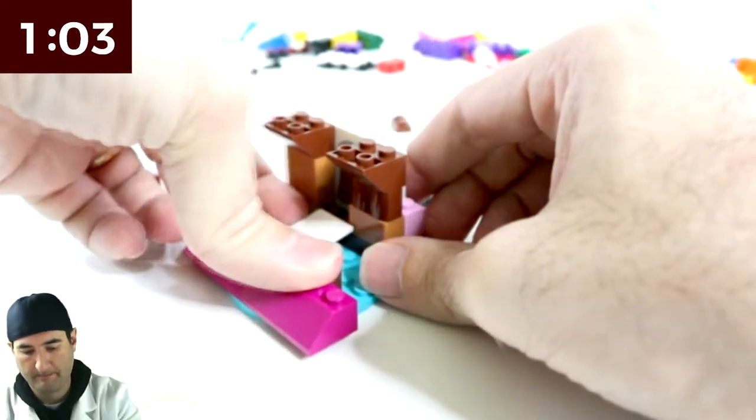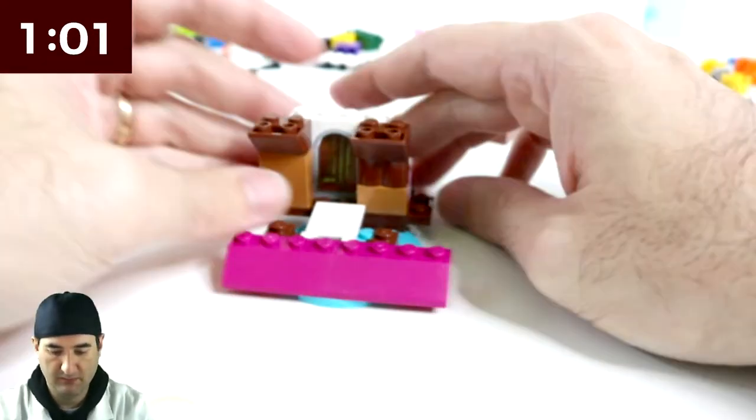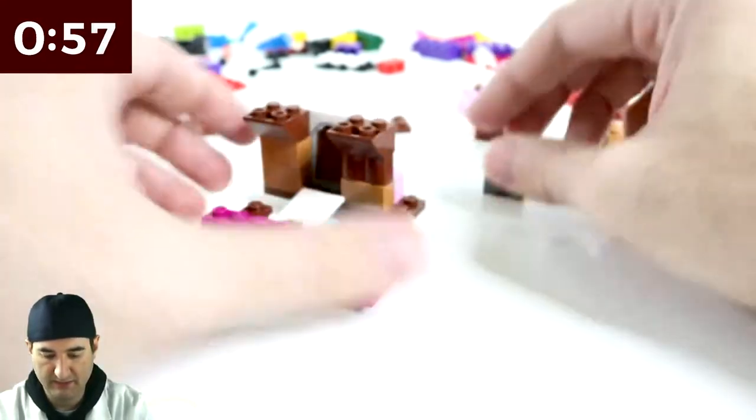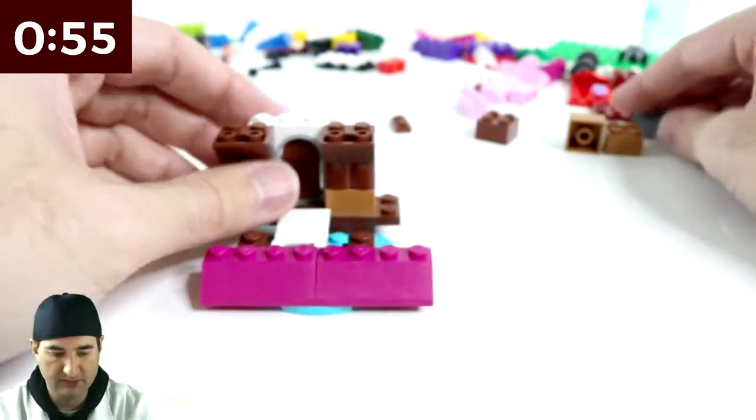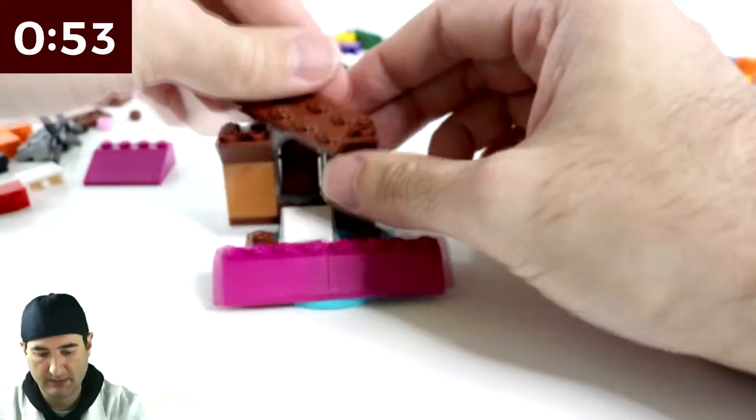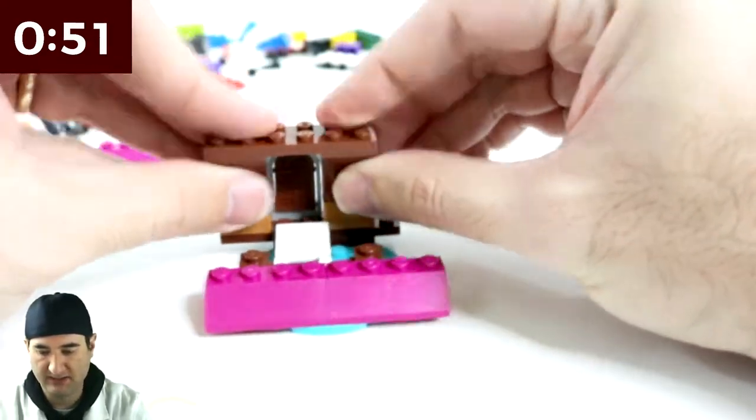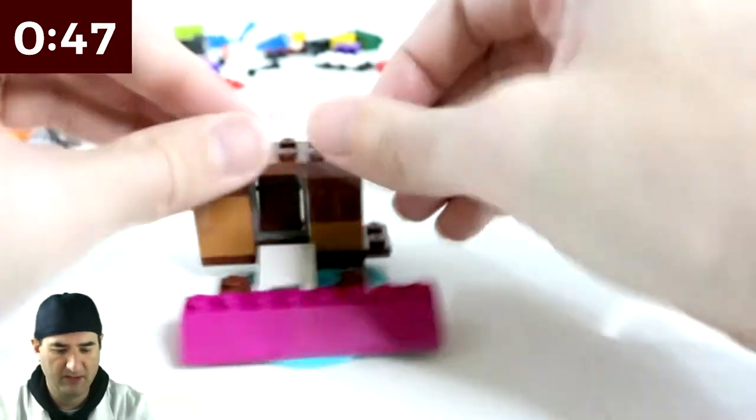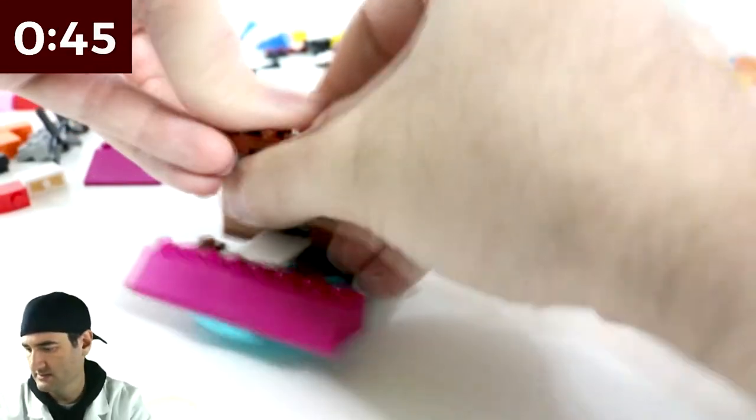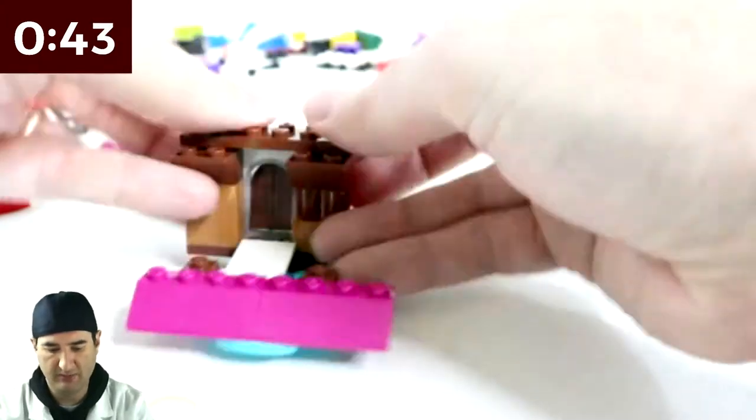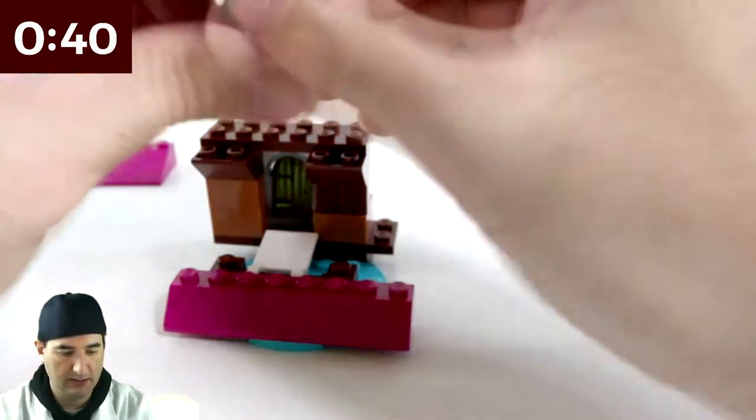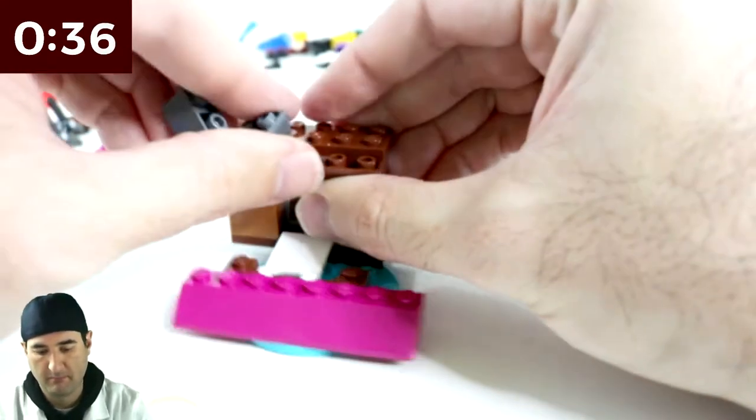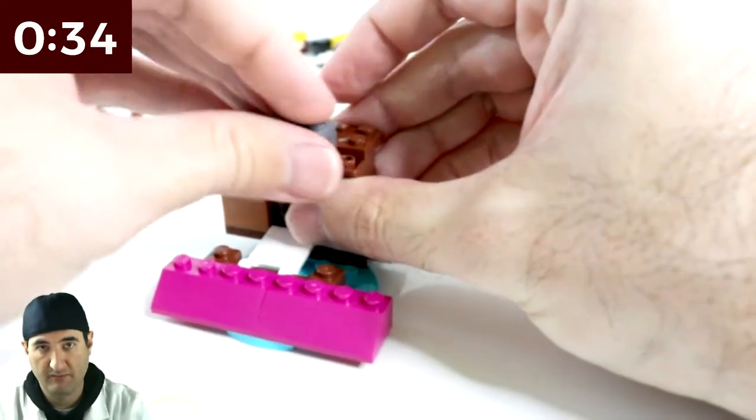That's a better ramp. There we go. Then we got... That offset really bothers me for some reason. So then we do this across the top. That overhangs a little too dramatic for me. So I'm gonna put it back on. That works better. And then maybe this goes up over the front.